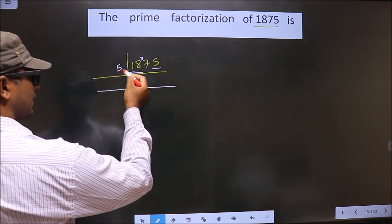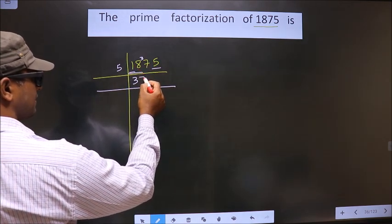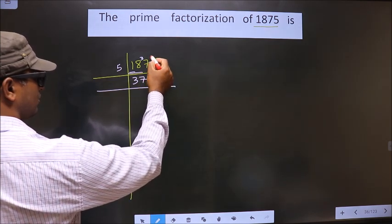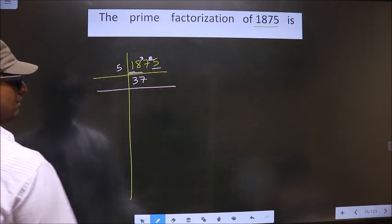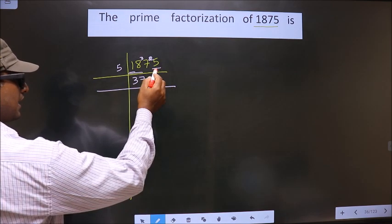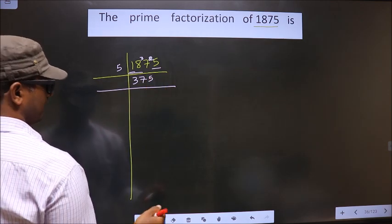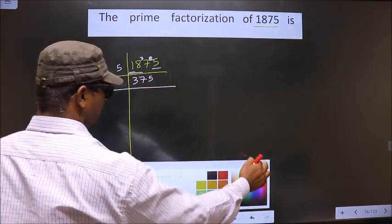Now, closer to 37 in 5 table is 5 times 7 is 35. 37 minus 35 is 2, 2 carried forward making it 25. When do you get 25 in 5 table? 5 times 5 is 25.